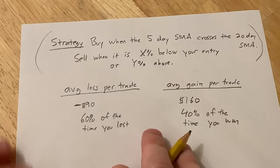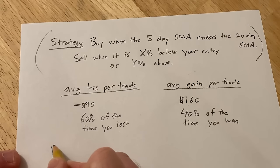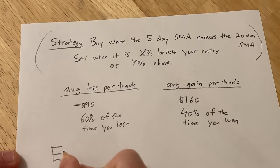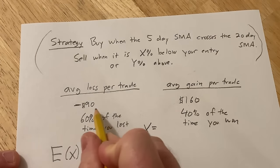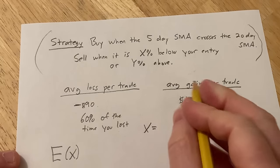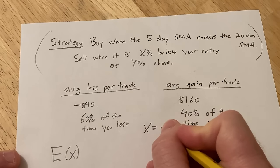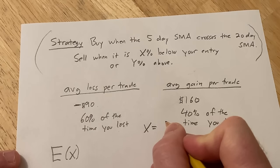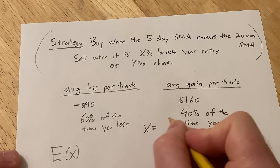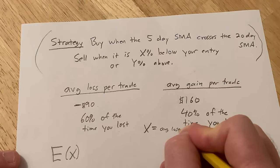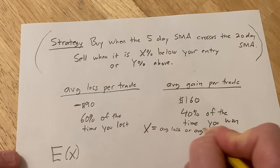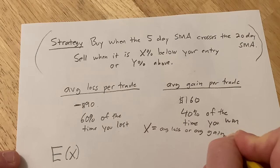So now you can use some math. You can compute something called the expected value of X, where X is either your average loss per trade or your average gain per trade. So X is going to be one of two values: negative 90 or 160. So it's going to be your average loss or average gain.